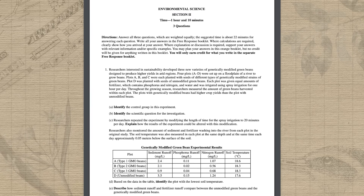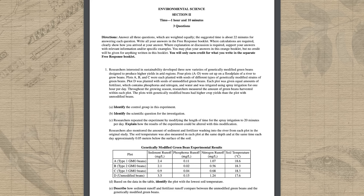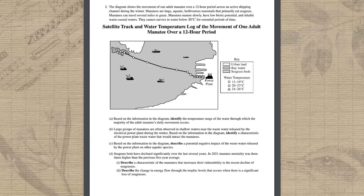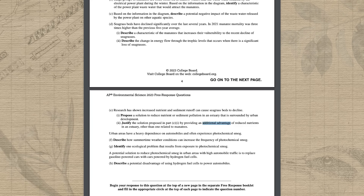Now let's take a look at the exact format of the three different FRQs. Question one will involve an experiment or scientific investigation, and four to five of the 10 points will directly relate to that experiment. You'll most likely have to identify a scientific question, hypothesis, variables, groups, or constants. Question two will focus on an environmental problem and will probably include a stimulus like a graph or map, with a couple easy identify points and then questions about a possible solution, including an unintended consequence or additional benefit of that solution.